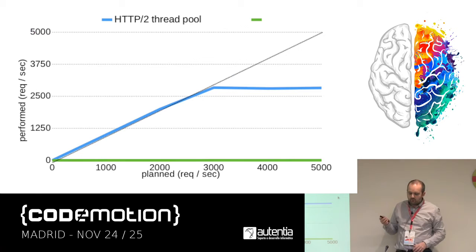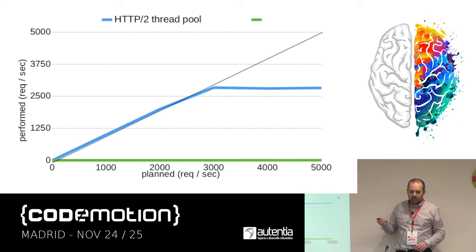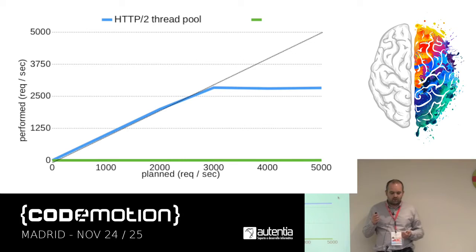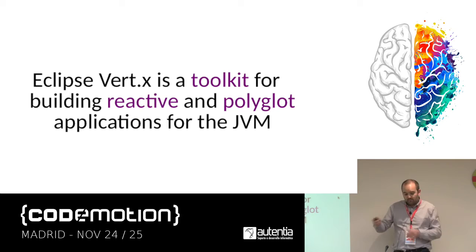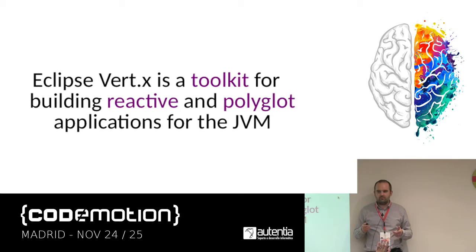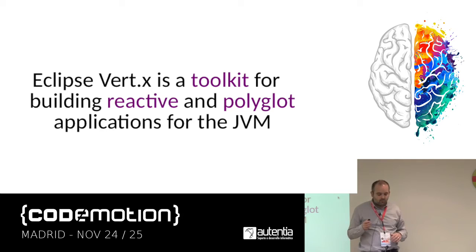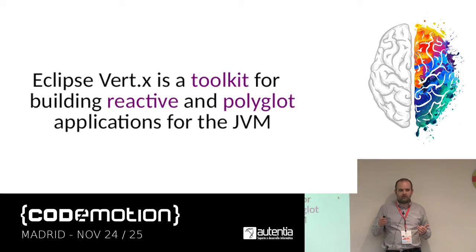After some time with HTTP/2 you see another plateau, and we want to know if there's an architecture that can make better use of the protocol. It's time to introduce the Vert.x toolkit. Who knows about it here? About a third of you. So Vert.x is a toolkit for building reactive and polyglot applications for the JVM.